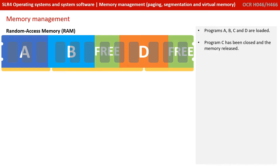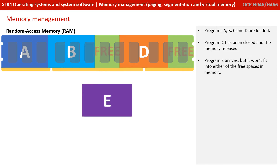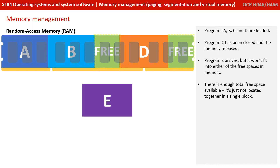Program C has now been closed and the memory has been released. Program E arrives, but as we can see it won't fit into either of the three spaces available in main memory. Now there is enough total free space available, it just doesn't have to be located together in a single block.